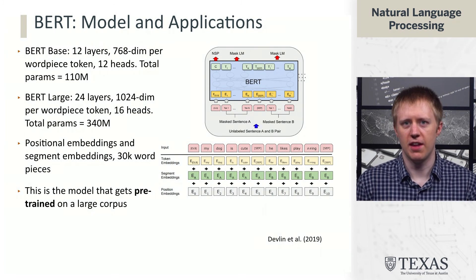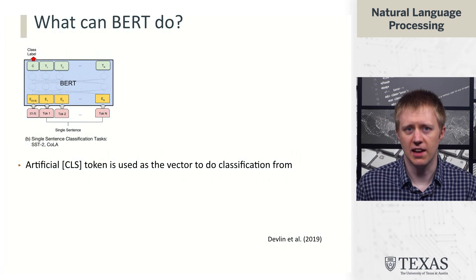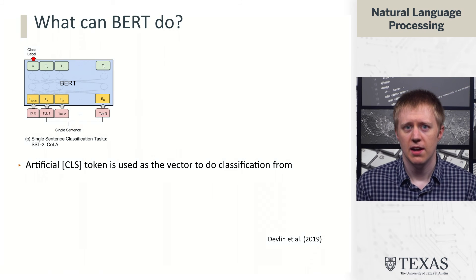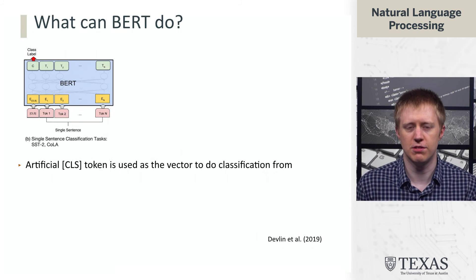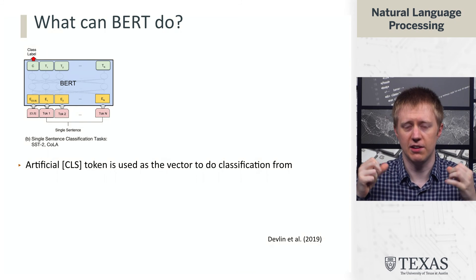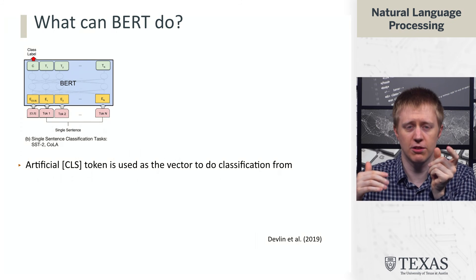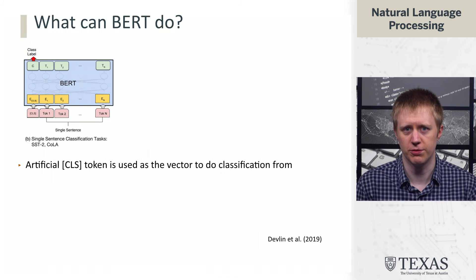This model is first pre-trained on a large corpus using the masked language modeling objective. Then the question is how do we apply it to other tasks. One important thing about BERT is the presence of the CLS token at the beginning, which was used to do the next sentence prediction task. The vector associated with the CLS token is typically used for classification in BERT — you encode your sentence, produce this single CLS vector, and feed it into a classification layer or small feed-forward network for your final prediction.